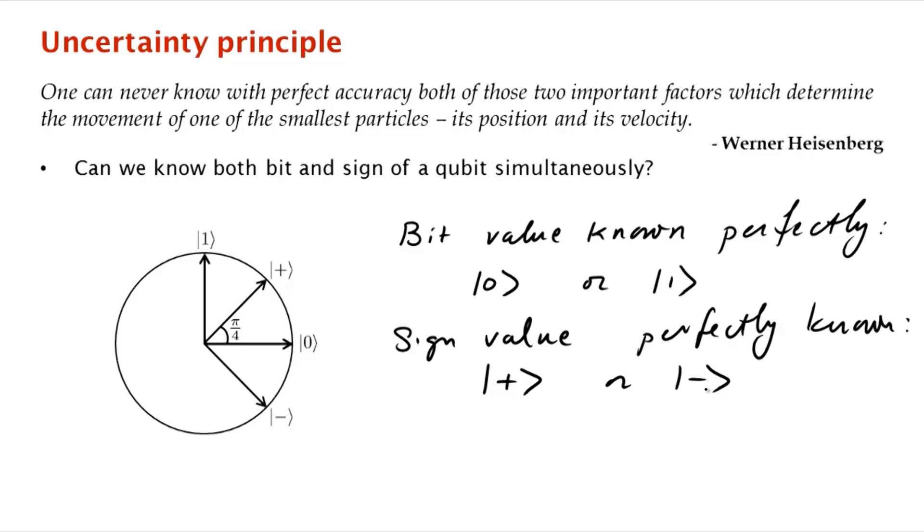But can't we get close to knowing both perfectly? Well, here's the reason, here's what's keeping us from knowing them perfectly. The reason is that these make a 45 degree angle with each other. So now if you have a state psi, as it tries to get closer and closer to either 0 or 1, it gets farther from plus and minus. So for it to be close to 0, it's got to make at least a 22 and a half degree angle with both plus and minus. Same thing for 1. If it's close to 1, it's got to make at least a 22 and a half degree angle with plus and minus. This gives us an uncertainty principle. You cannot perfectly know both the bit and the sign value.